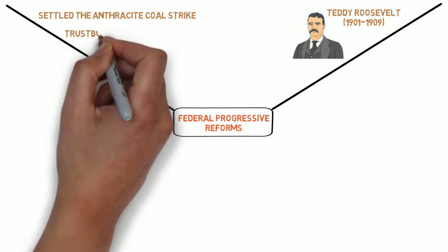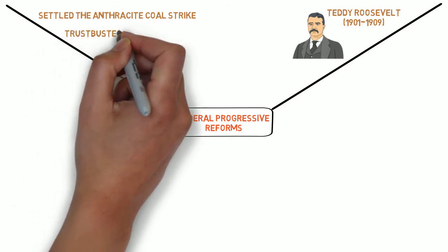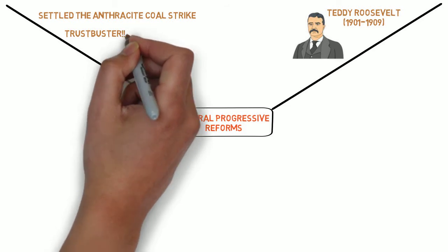Roosevelt added to his progressive reputation when he applied the Sherman Antitrust Act to break up monopolies. In 1903, the federal government sued J.P. Morgan's Northern Securities Corporation to stop Morgan's attempt to monopolize the railroad industry. The federal government won the case and Teddy Roosevelt became known as the trust buster.